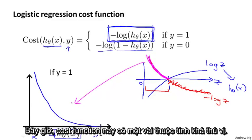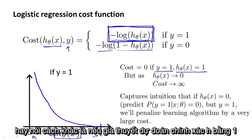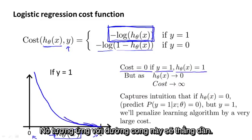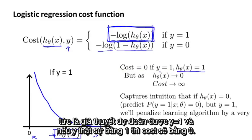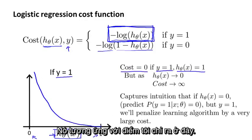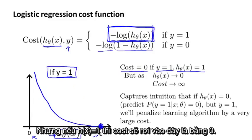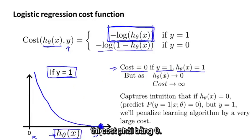This cost function has some interesting and desirable properties. First, if y equals 1 and h(x) equals 1 — the hypothesis correctly predicts y equals 1 — then the cost is equal to 0. That corresponds to the point at h(x) equals 1 on the curve. If we correctly predict the output y, the cost is 0.